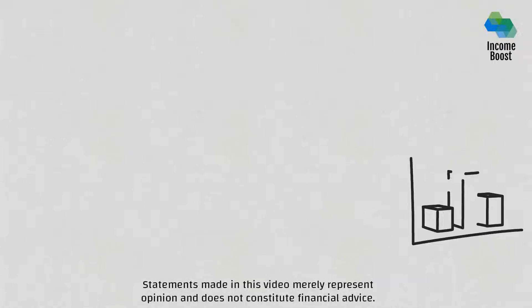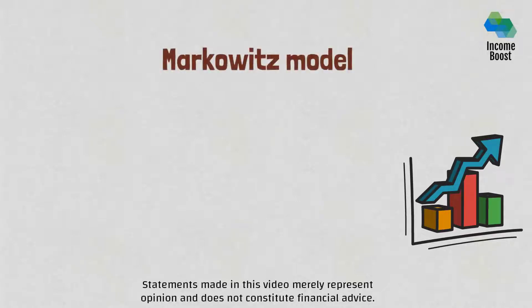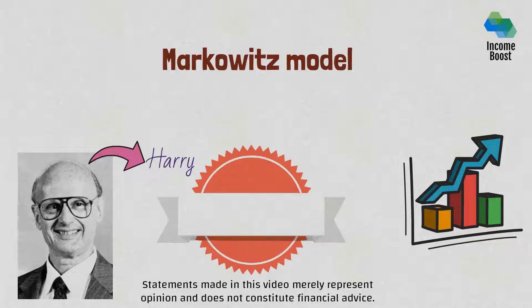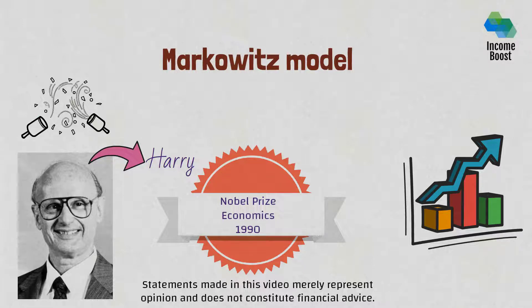In today's video, you're going to learn about constructing the best investment portfolio and what we really mean when we define best. This portfolio optimization model is formally known as the Markowitz model and, as the name suggests, was created by Harry Markowitz in 1952. He eventually went on to win the Nobel Prize in Economics in 1990. Let's dive into the theory behind the model, why it's so important, and conversely why it has some limitations.